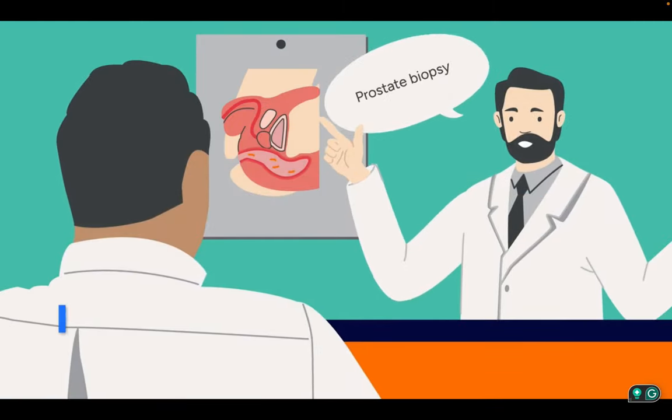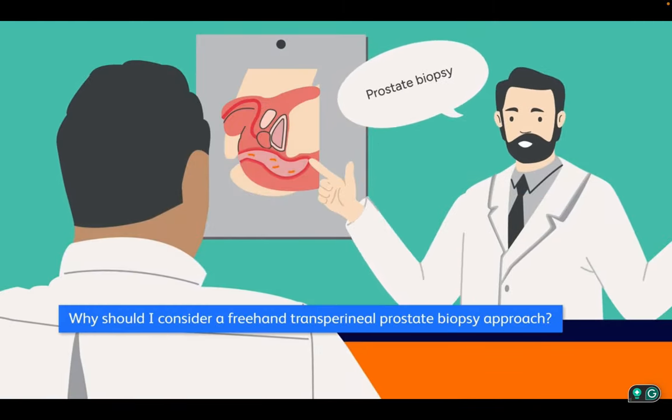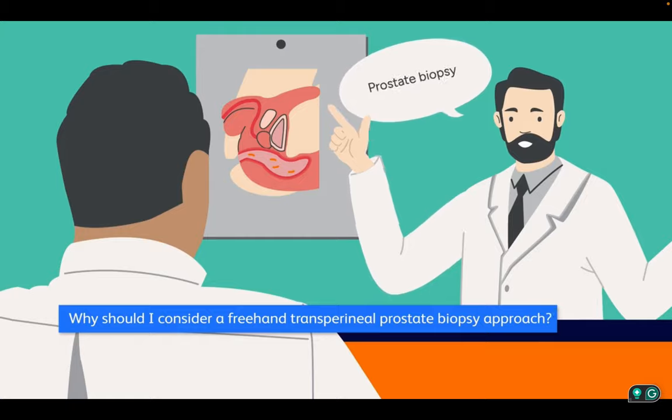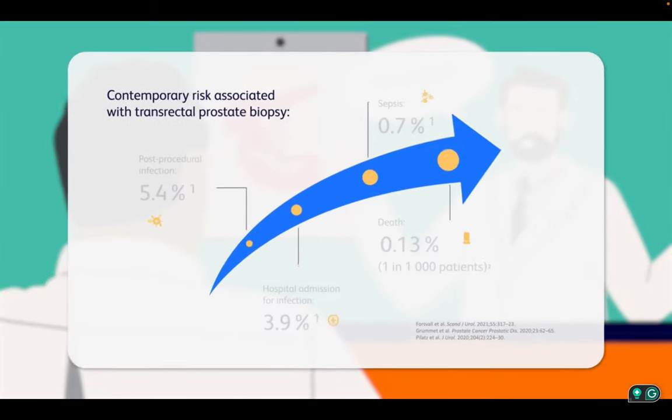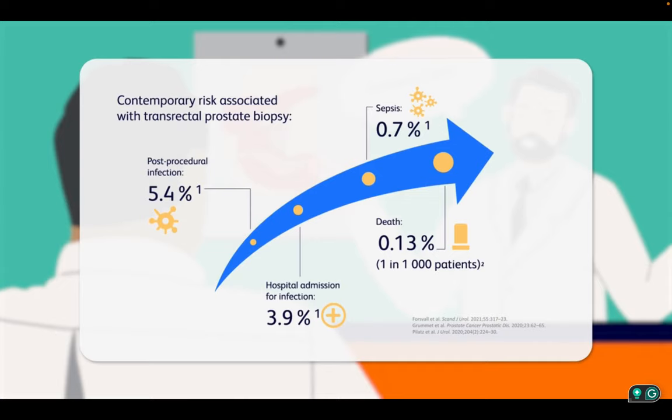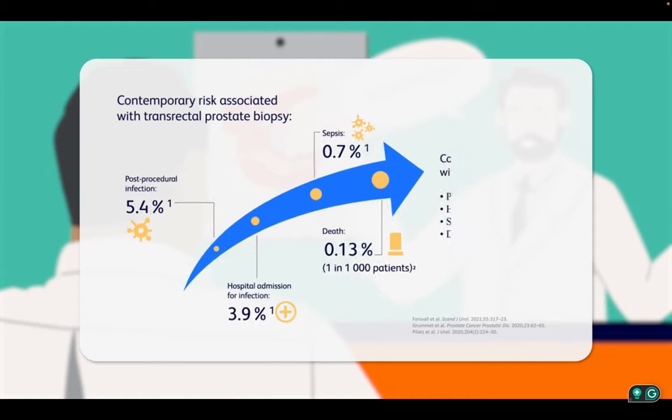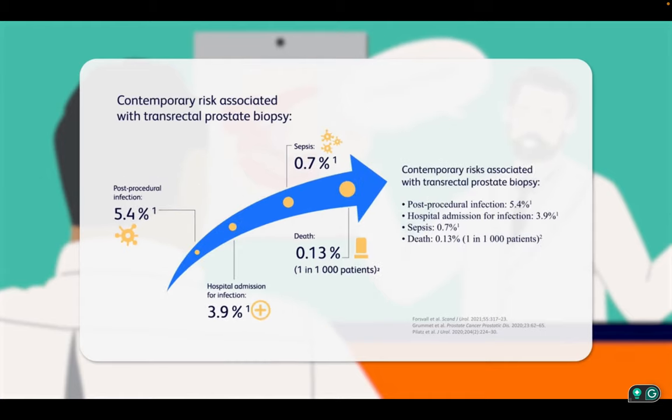Prostate biopsy is one of the most common urological procedures. However, a rise in antimicrobial resistant uropathogens, particularly those resistant to the commonly used quinolone pre-procedural prophylaxis, has led to a global increase in infections following traditional transrectal prostate biopsy.